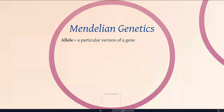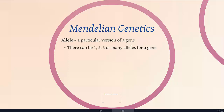An allele is a particular version of a gene. A gene codes for a particular protein, and different alleles will code for slightly different versions of that same protein. For any one gene, you could have just one allele — meaning every copy is identical — or you could have two, three, four, or millions of alleles. Most genes will have two or three alleles.